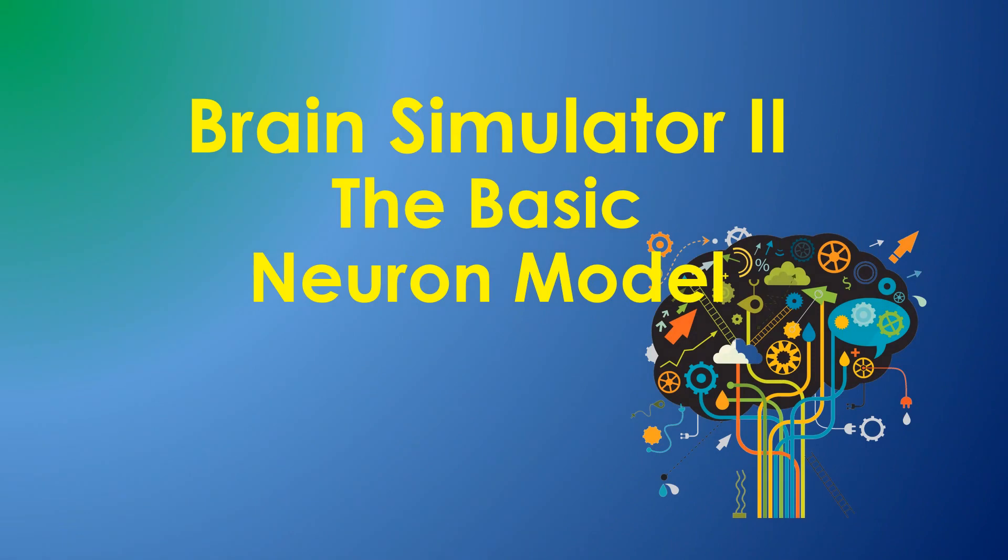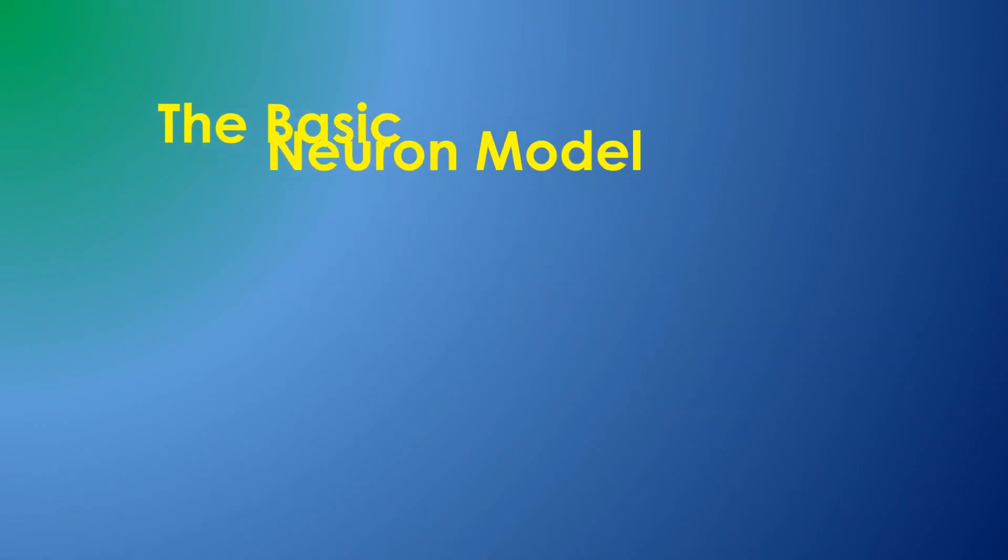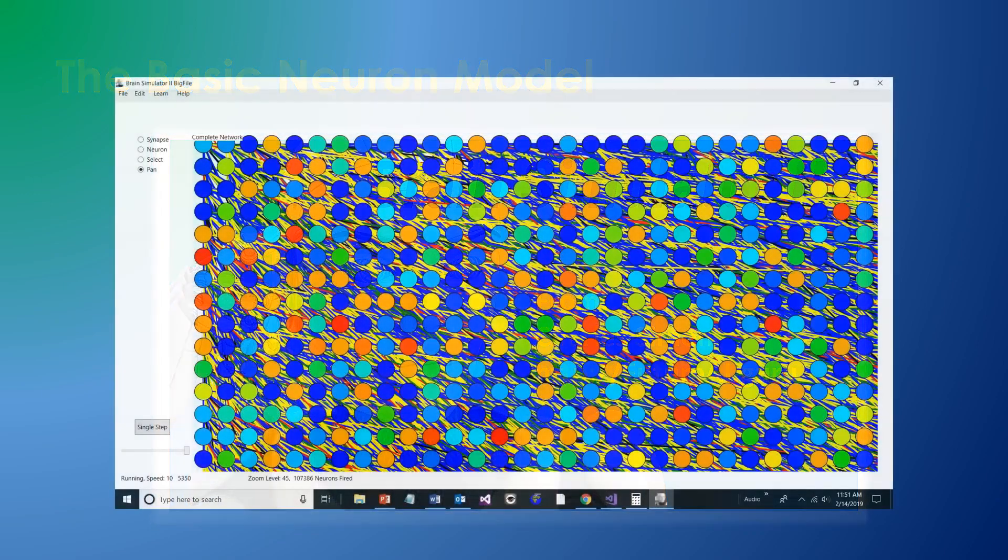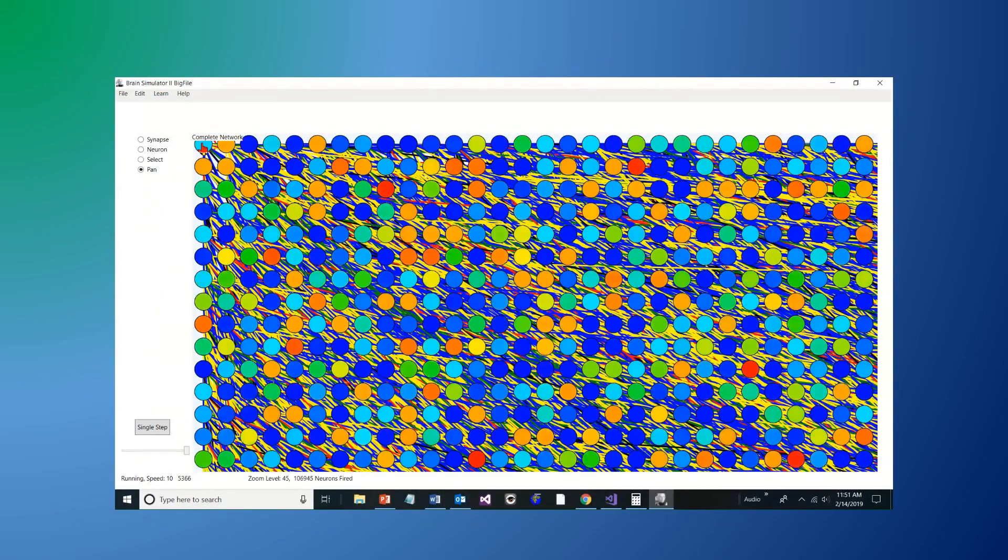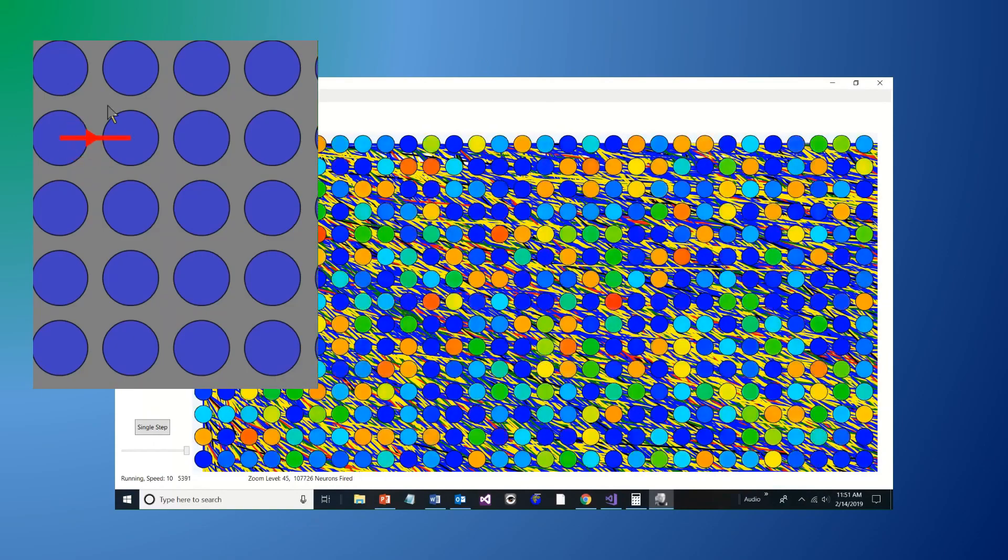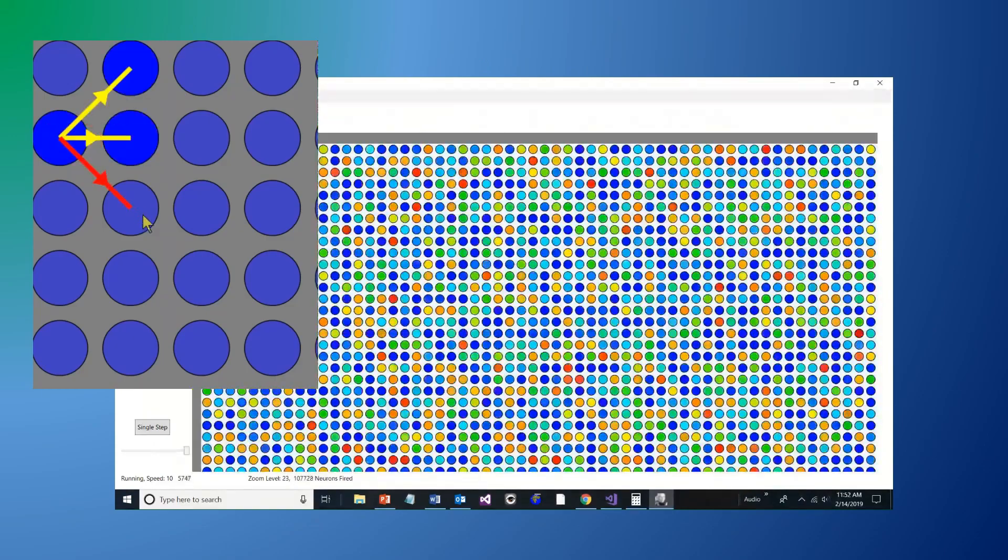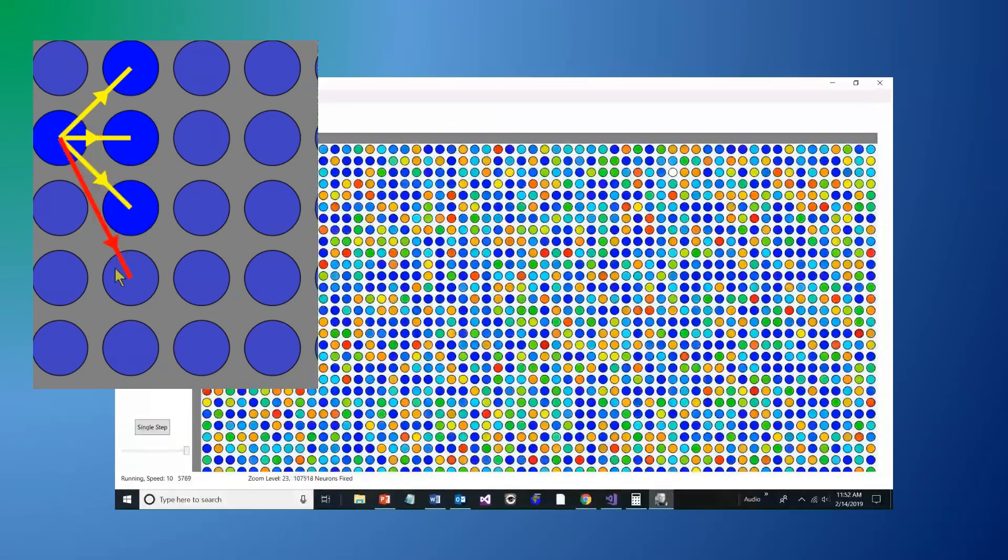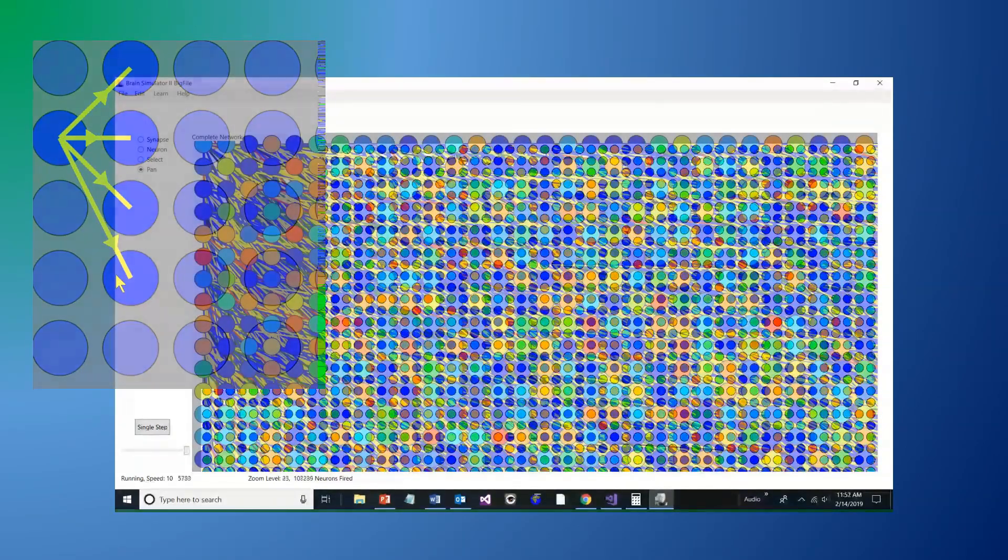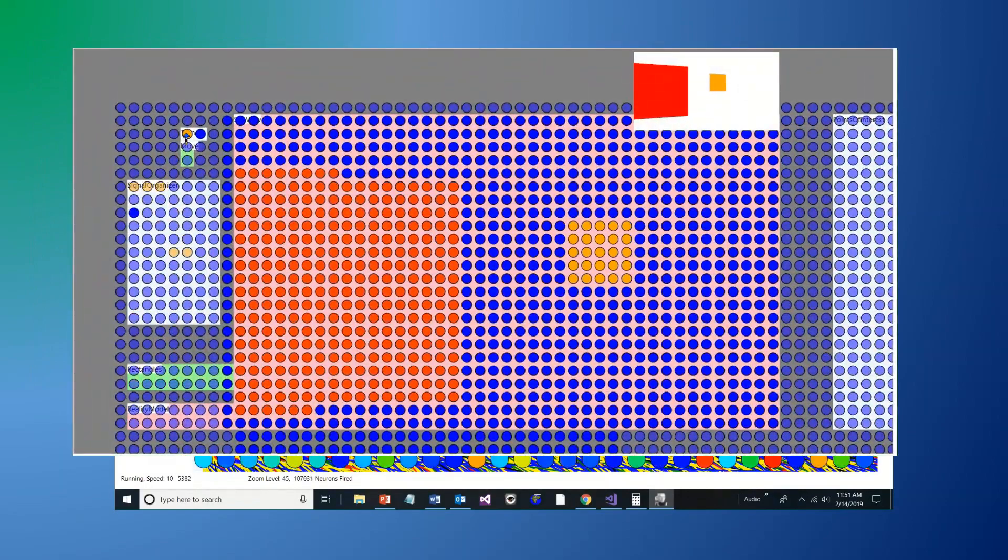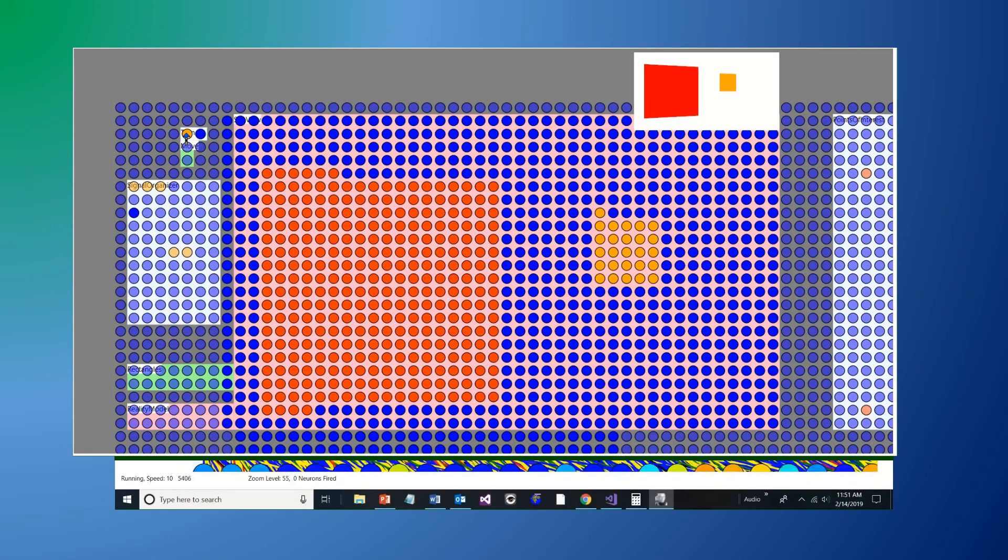Brain Simulator 2: The Basic Neuron Model. The Brain Simulator implements a vast array of artificial spiking neurons, and there are two ways to implement functionality. In this video, I'll discuss the basic neuron model used in the Brain Simulator, where you can create functionality by controlling individual synapse connections. In the next, I'll describe how software behind any group of neurons can implement more complex functionality.